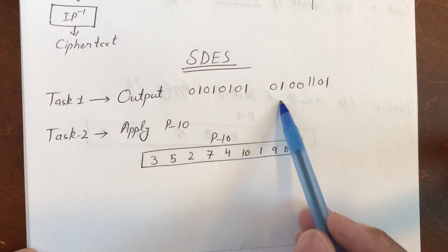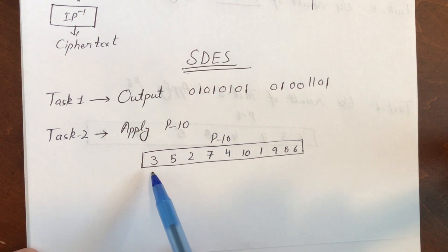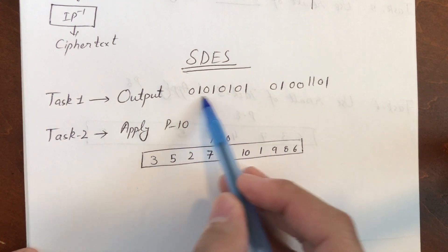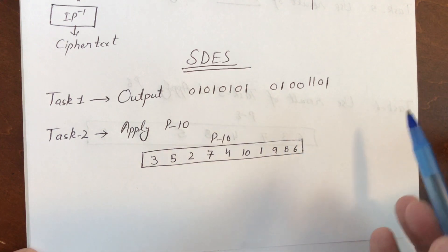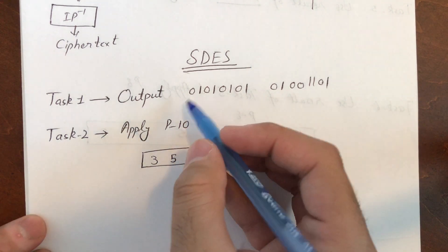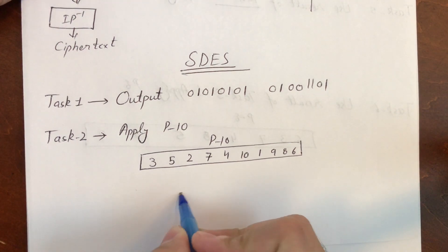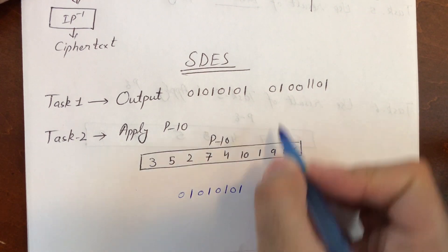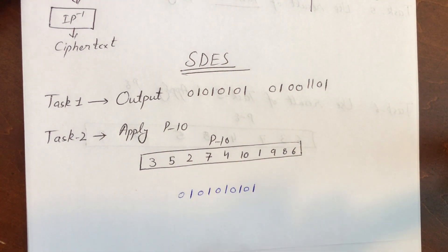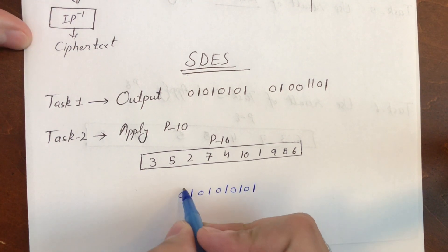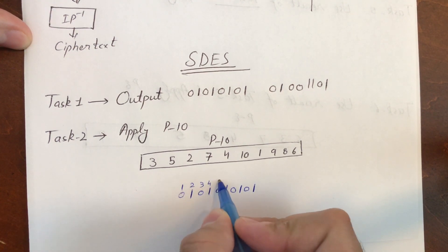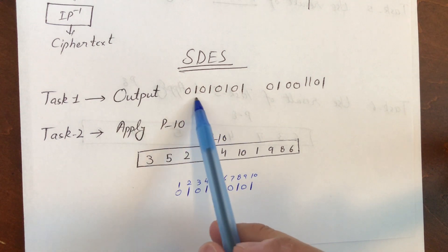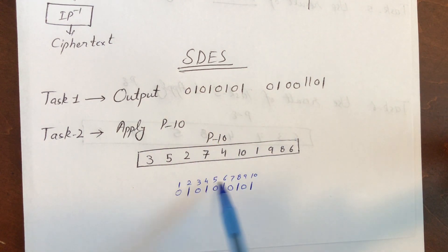For Task 2, we are using the first 10 bits of your ASCII code and need to apply Permutation 10 (P10). First, write down 10 bits — since ASCII is 8 bits, borrow two bits from your second letter. My first 10 bits are 0 1 0 1 0 1 0 1, and I borrow these two bits to make it 10. Then write the numbering on top: 1 2 3 4 5 6 7 8 9 10.